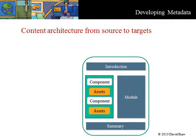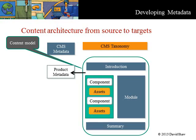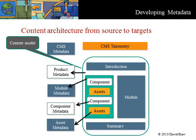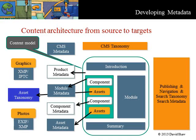Finally, when we implement taxonomy and metadata in a content management system, we have to develop the overall content architecture from source assets through information objects to the target outputs as information products. The information product shown here has a content model comprised of various information or content objects and digital assets like graphics and photos. The content management system will have a taxonomy and metadata for managing creation and production, with metadata objects for product, modules, components, and assets. There will also be one or more taxonomies and metadata filters for publishing and for users to search and find information. On the source side, there will be metadata for graphics and photos and possibly a taxonomy for these digital assets. Together, these comprise the information or content architecture from the content sources to the output targets.